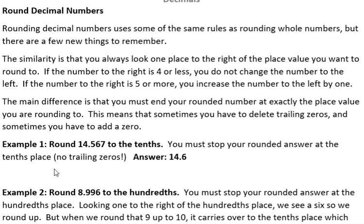For example, if we were asked to round 14.567 to the tenths place, the tenths place is here at the five. We look one to the right, which is a six. You round the five up to a six because you have a six there.